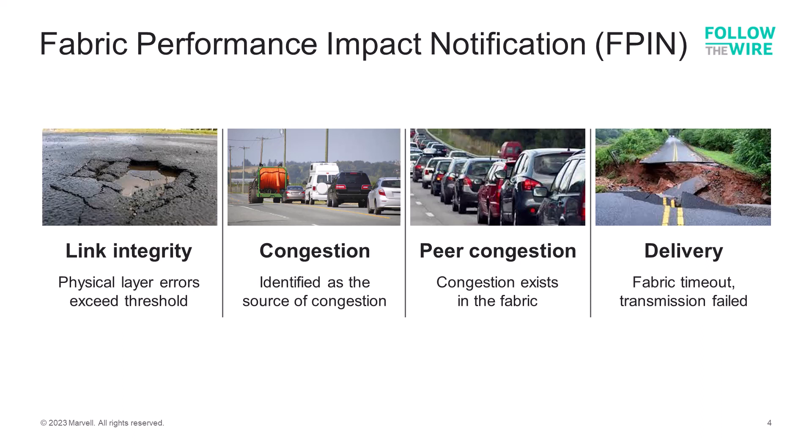The second is congestion: the HBA port is creating the congestion on the fabric, and workloads associated with this specific port are causing the traffic delays. The third is peer congestion — a notification that there's congestion on the fabric, but it's coming from another host port, like a traffic jam ahead. And the final one is delivery: the fabric has timed out and there are delivery issues, analogous to the road being washed out.